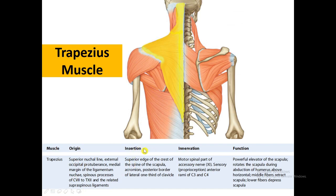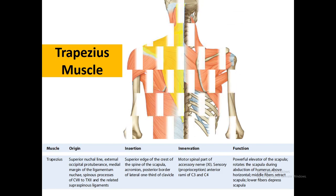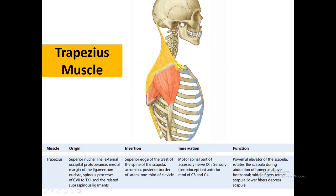The trapezius inserts on the superior edge of the crest of the spine of the scapula, the acromion, and the posterior border of the lateral one-third of the clavicle — which we can't see from the posterior view. On the lateral view, we can see that the lateral one-third of the clavicle receives the insertion of the trapezius muscle.